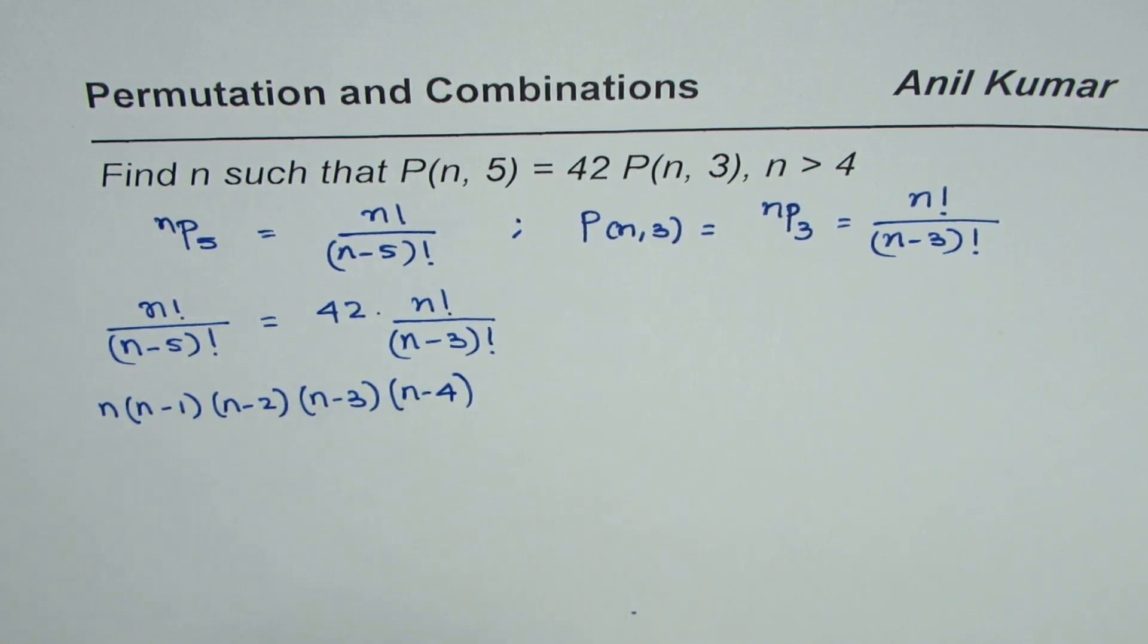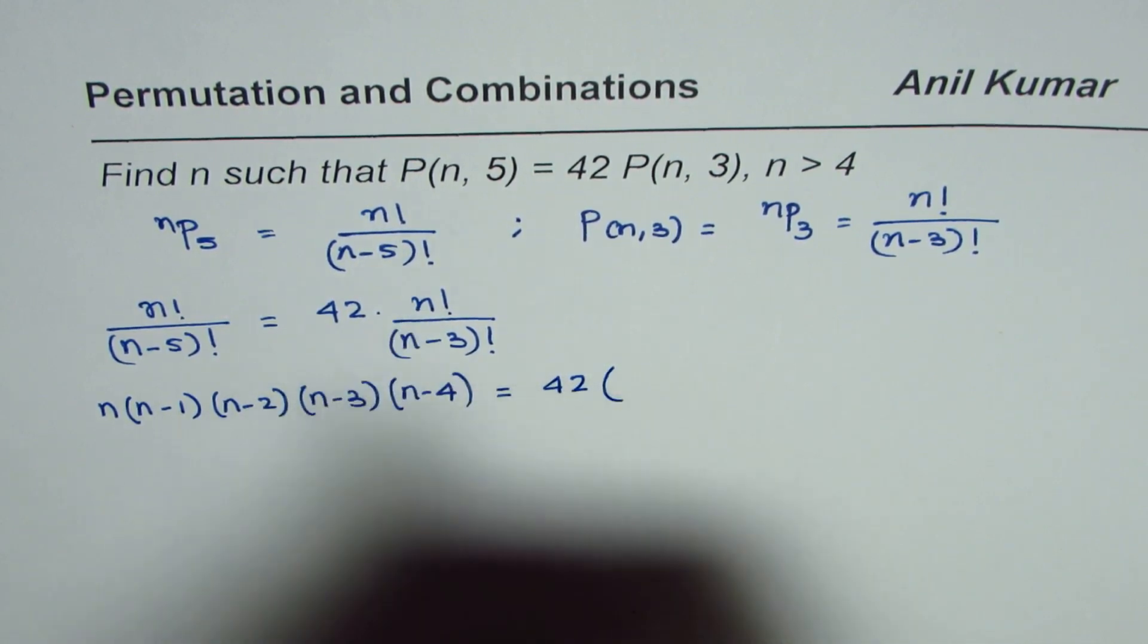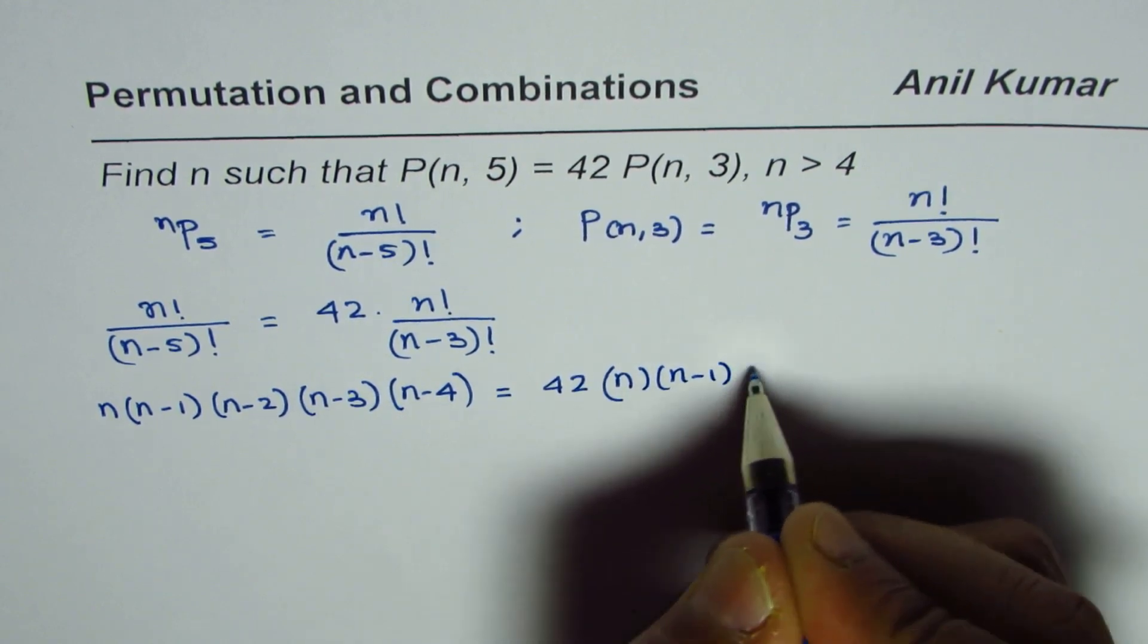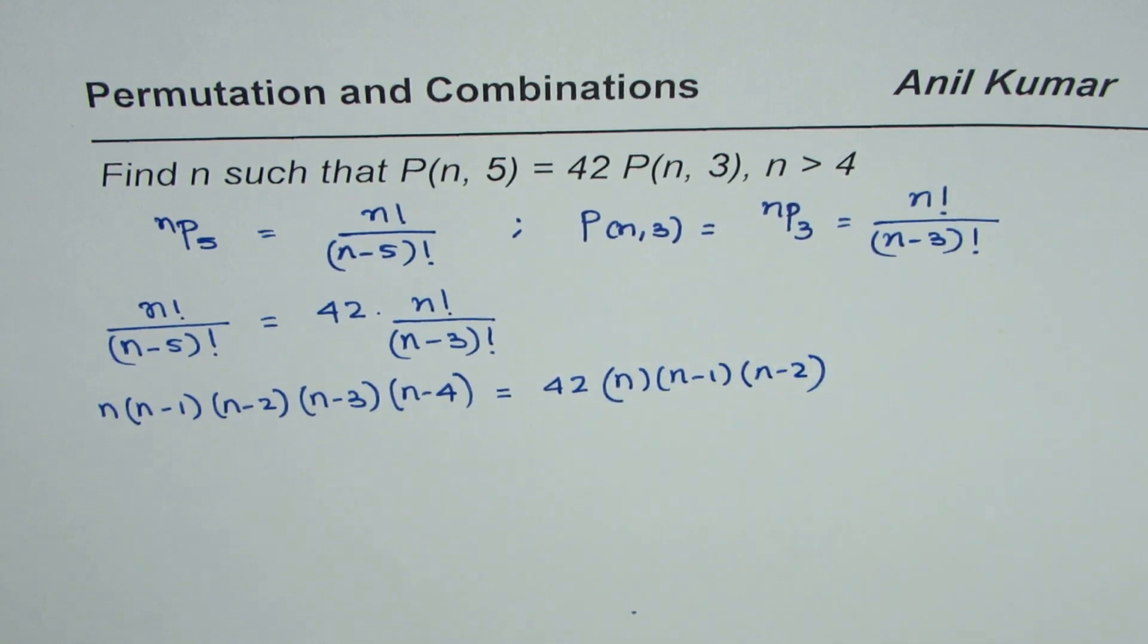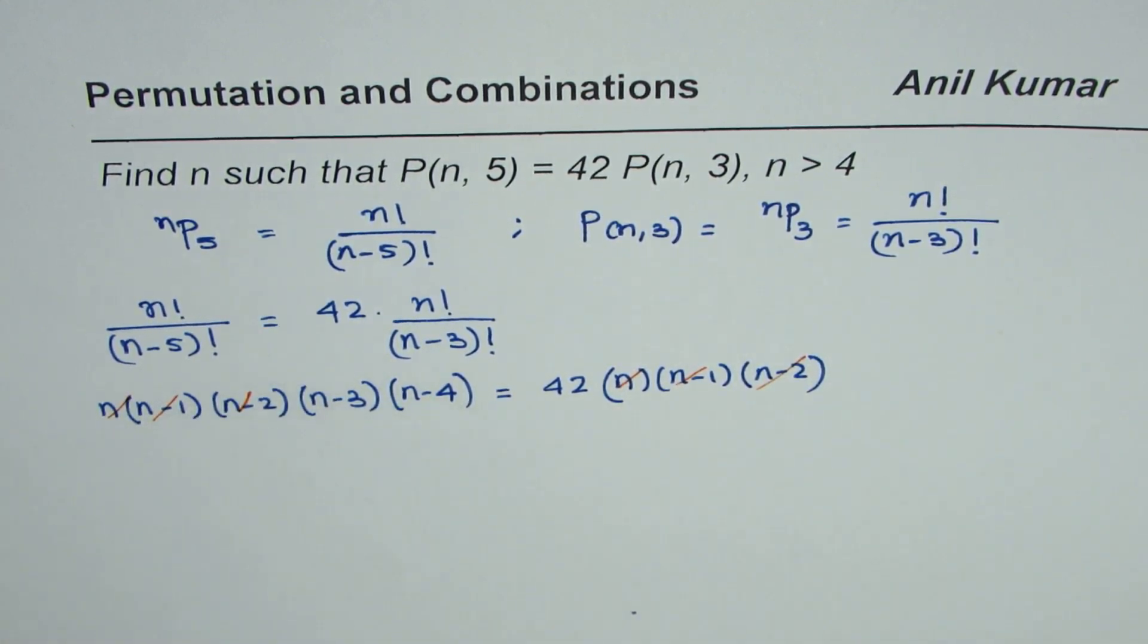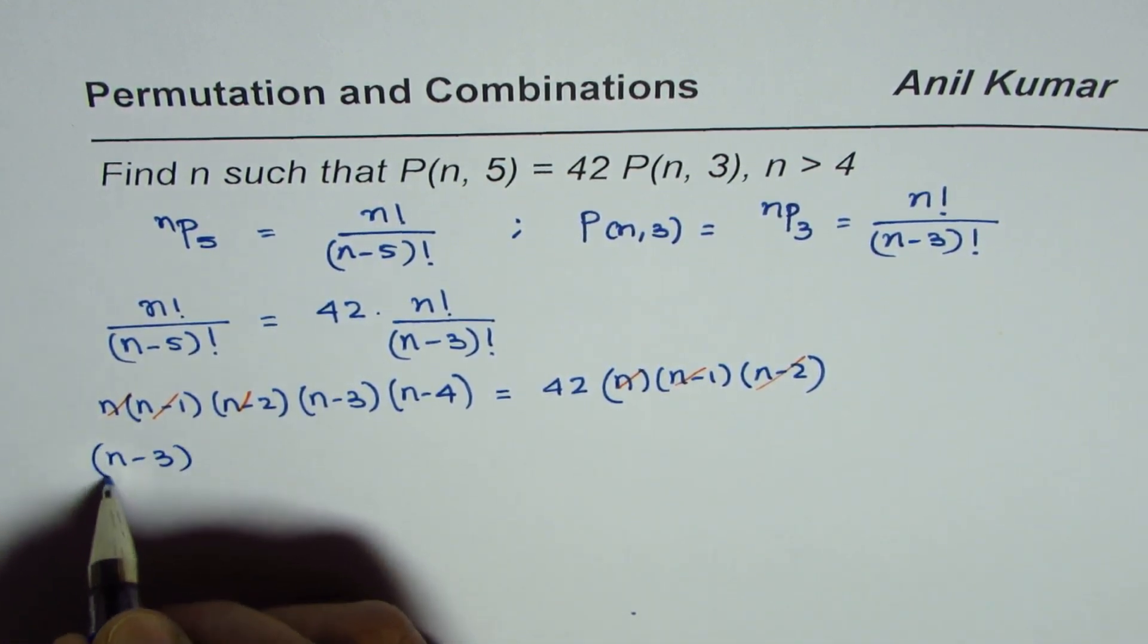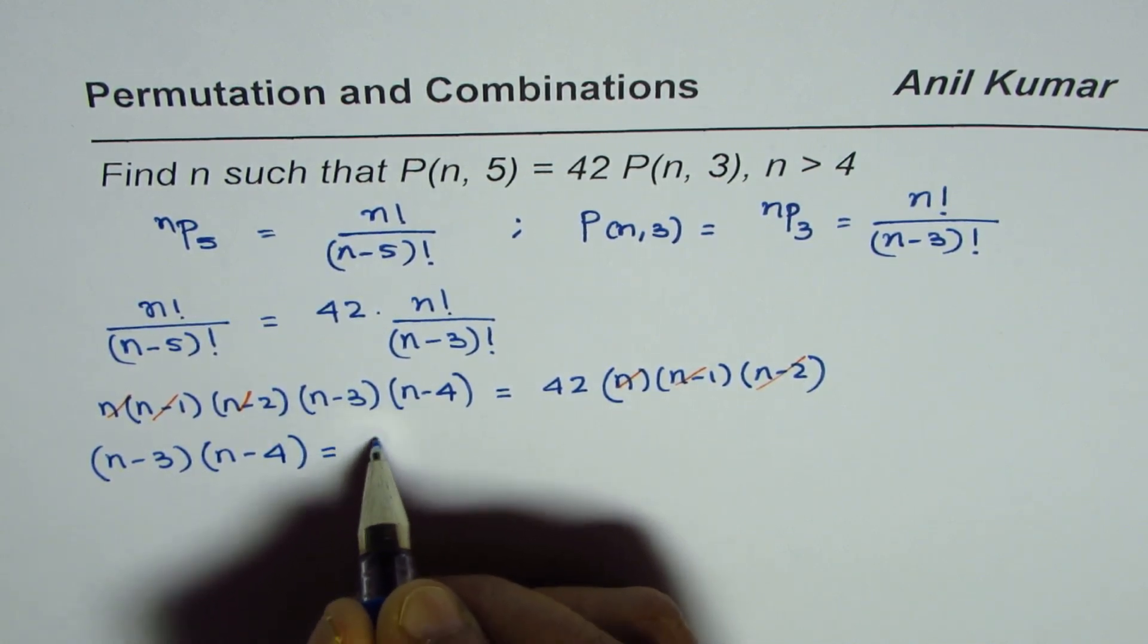So we are left with this equals 42 times here it means n times (n-1) times (n-2). So that is how it simplifies. And we can cancel these three terms. So we are left with (n-3) times (n-4) equals 42.